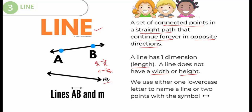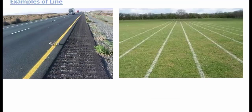A set of connected points in a straight line that continues forever in opposite directions. A line has one dimension and does not have width or height. We use either one lowercase letter to name a line, or two points with the symbol. Here are examples of a line which extends both sides endlessly.